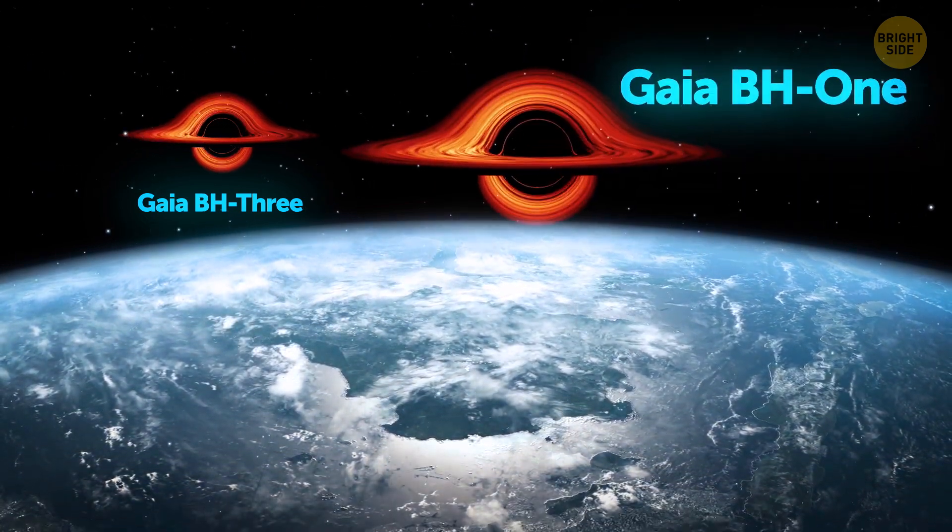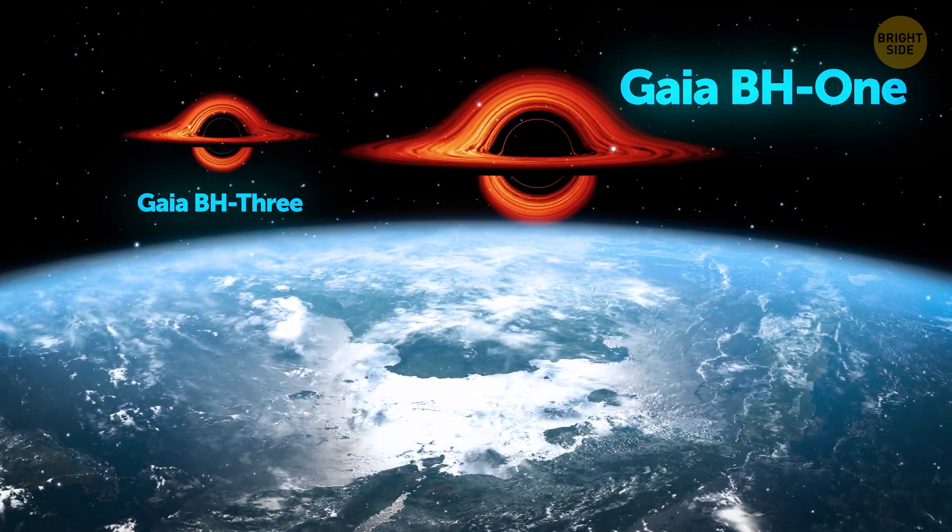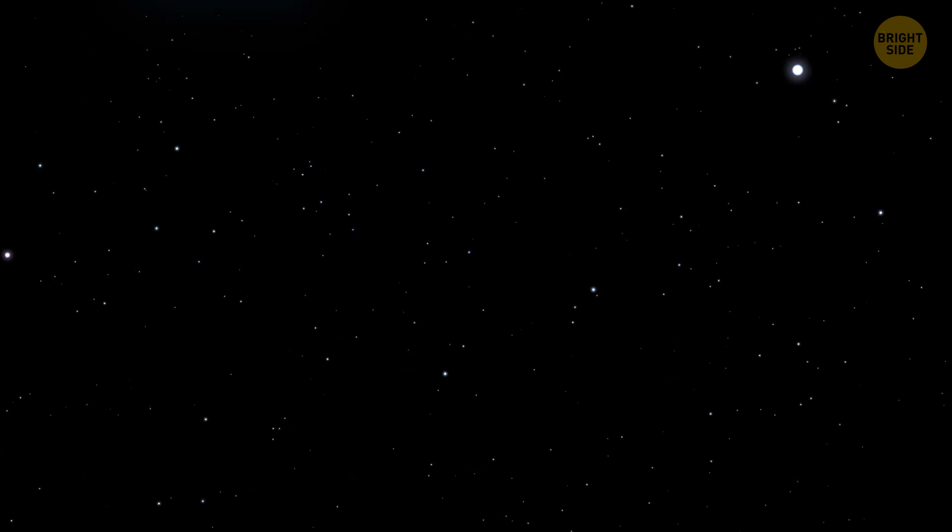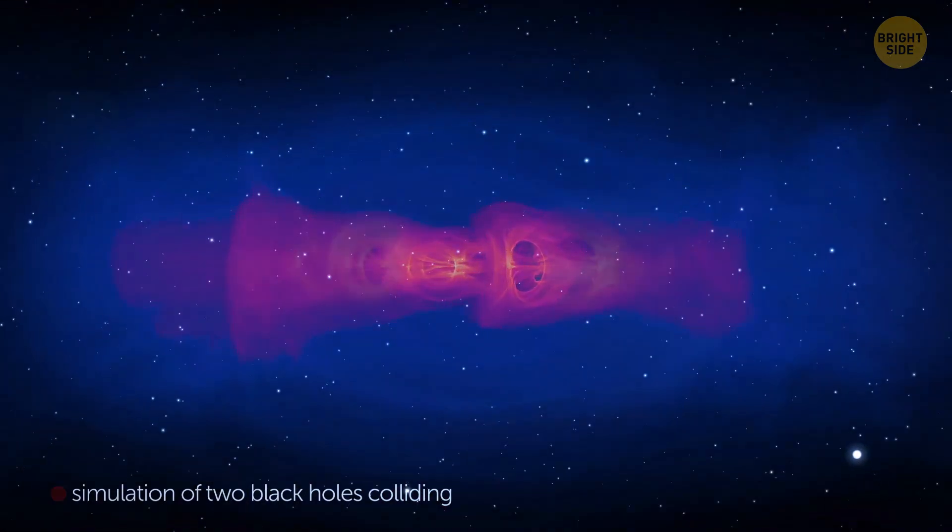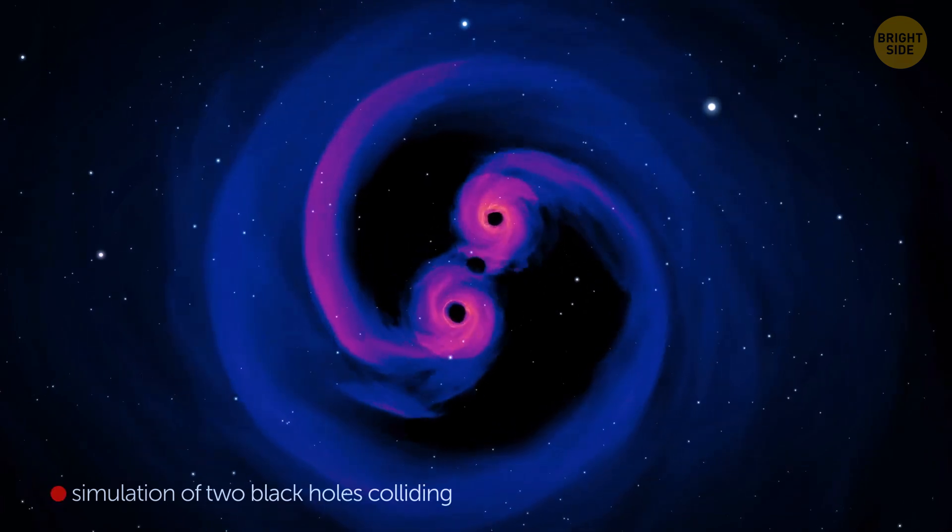The proximity of this space object to Earth makes it the second closest to our planet black hole ever discovered. The nearest one is called Gaia BH1. Makes sense. It's hanging out around 1,560 light years away from us. This uncomfortably close neighbor has a mass of around 9.6 times that of the Sun. That means it's way smaller than the newly found black hole.